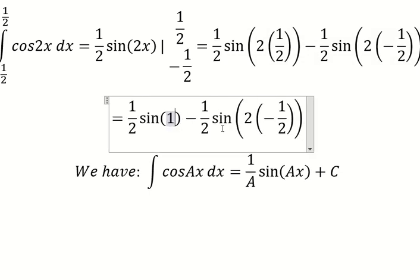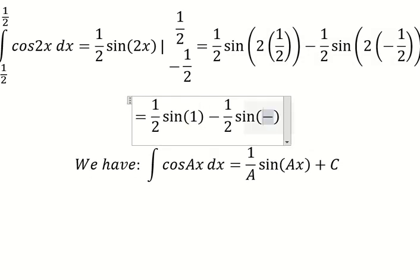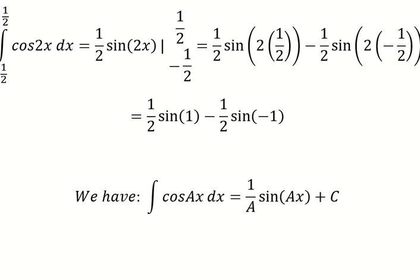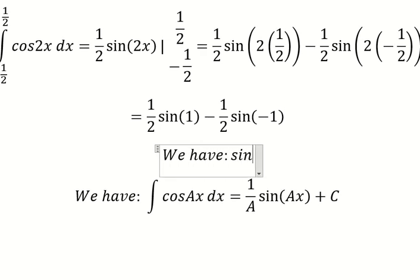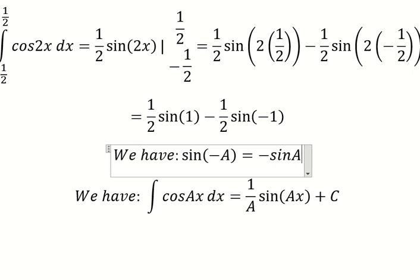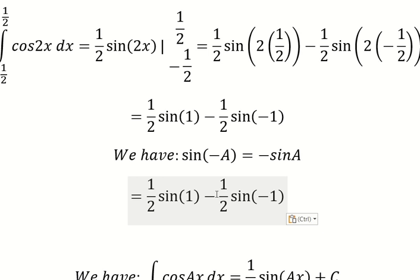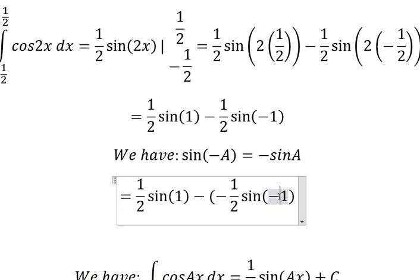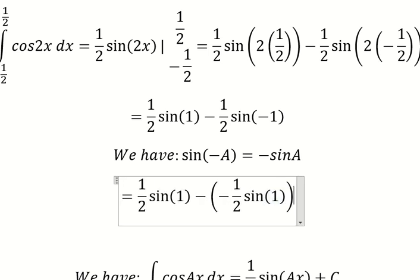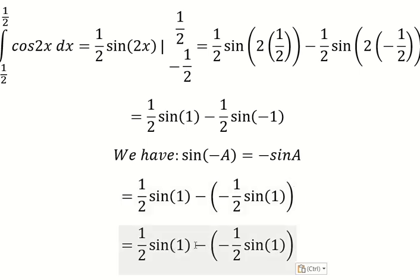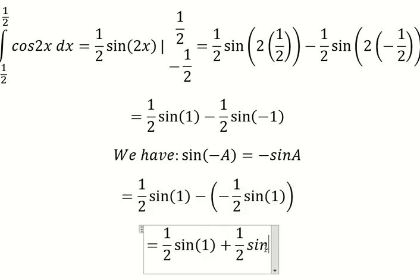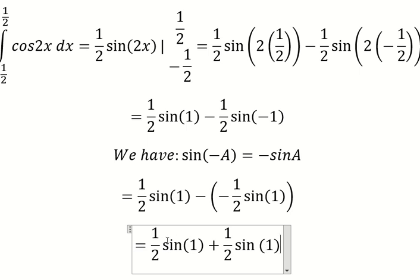So this one we have number one, and this one we have negative number one, so we have the formula in here. The negative we put outside. Negative and negative we have positive. One over two plus one over two, we have number one.